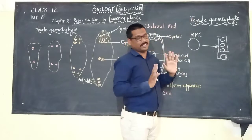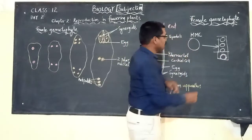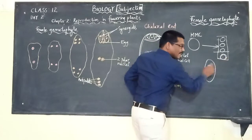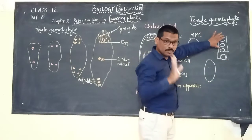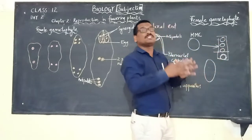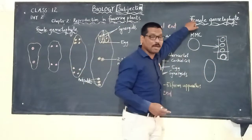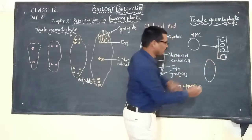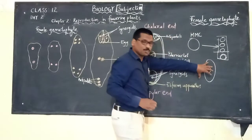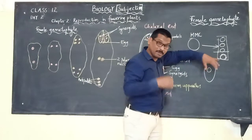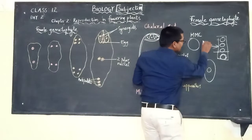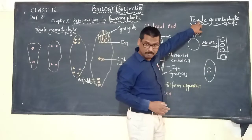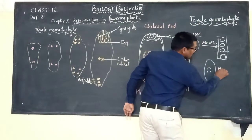That one maturing megaspore will become the female gametophyte, called the embryo sac. Three megaspores degenerate and only one megaspore undergoes growth and development into a female gametophyte. This megaspore will now undergo mitotic division — please remember, the MMC underwent meiosis, but here this megaspore undergoes mitosis.